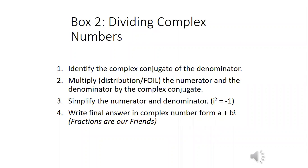So our steps for dividing complex numbers are: one, we identify the complex conjugate of the denominator. We multiply, so either distribution or foil, the numerator and the denominator by the complex conjugate. We need to remember that i squared equals negative one. So when you see i squared, it needs to be replaced with negative one. And then we're going to write final answer in complex number form A plus Bi.